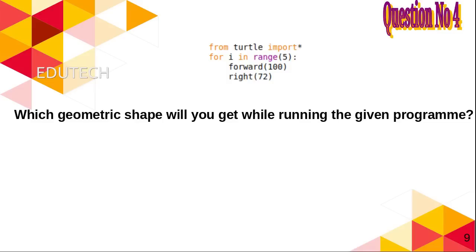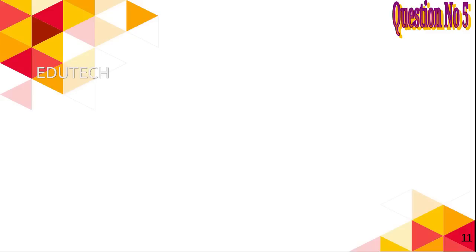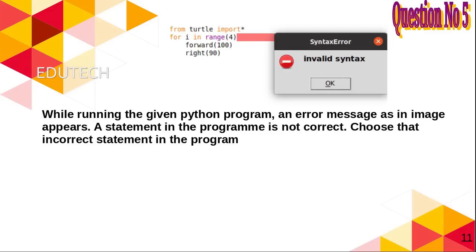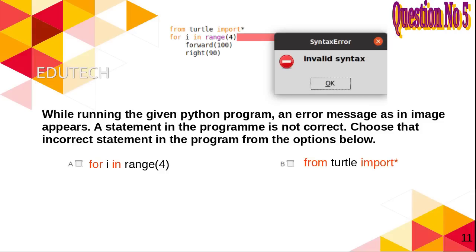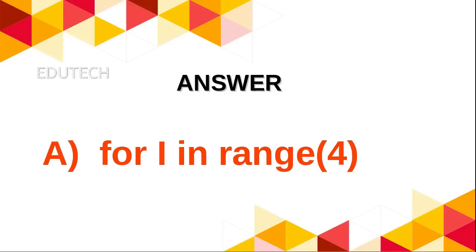Question 4: Which geometric shape will you get while running the given program? Question 5: While running the given Python program, an error message as shown in the image appears. A statement in the program is not correct. Choose that incorrect statement from the options: A. for i in range range 4, B. from turtle import star, C. forward 100, D. right 90. Answer: A. for i in range range 4.